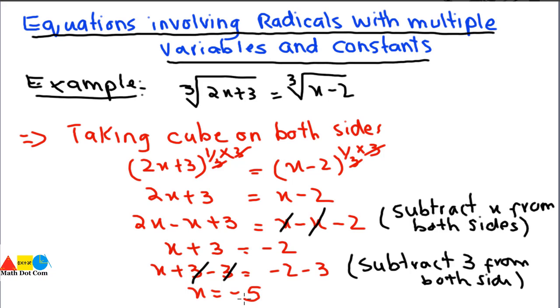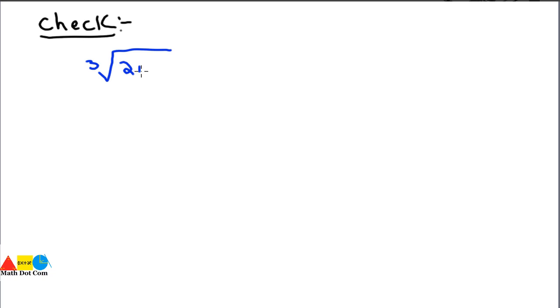This is exactly the same approach we saw in our previous lecture — solving linear equations with radicals — but the difference here is that we have multiple variables. Now let's check whether our solution is correct, as sometimes we come across extraneous roots where we get multiple results and must select only those that satisfy the given condition.